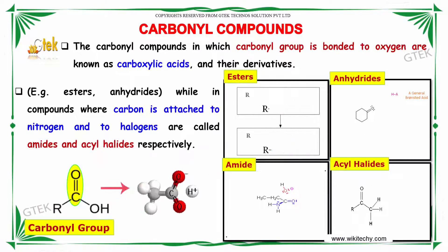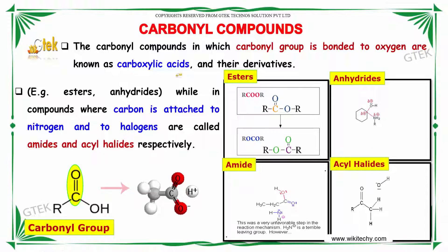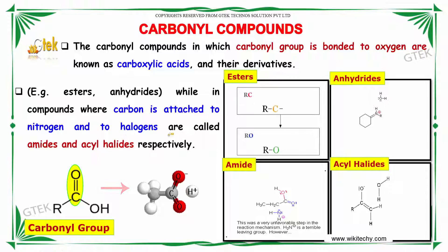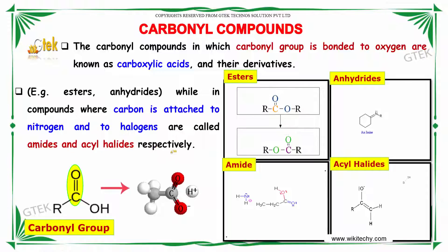The carbonyl compounds in which the carbonyl group is bonded to oxygen are known as carboxylic acids and their derivatives, while compounds where carbon is attached to nitrogen and to halogens are called amides and acylhalides respectively.